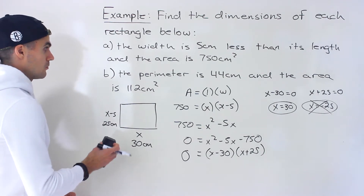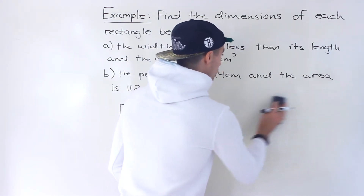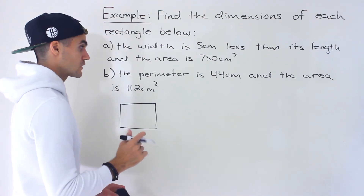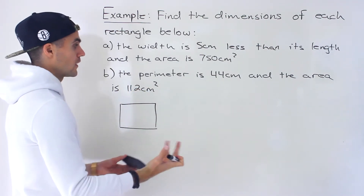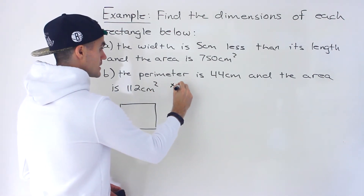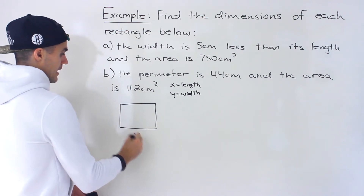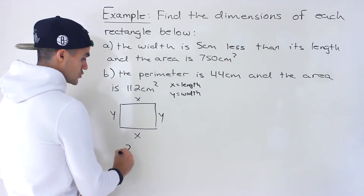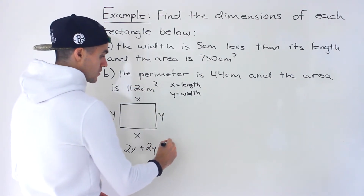Now in part B, we're given different information — the perimeter is 44 centimeters and the area is 112 centimeters squared. This one's a little different. I'm going to introduce two variables, because in part B we're not told directly how the length and the width relate. So I'll let x equal the length and y equal the width. Adding all four sides: x plus x is 2x, y plus y is 2y, and that perimeter equals 44, so 2x plus 2y equals 44.